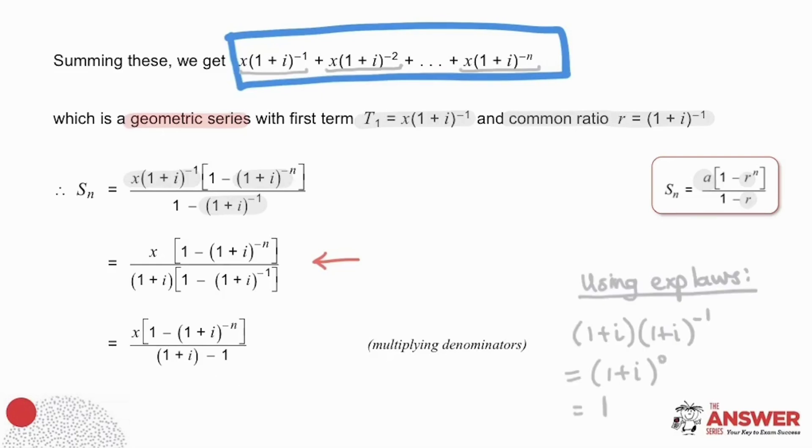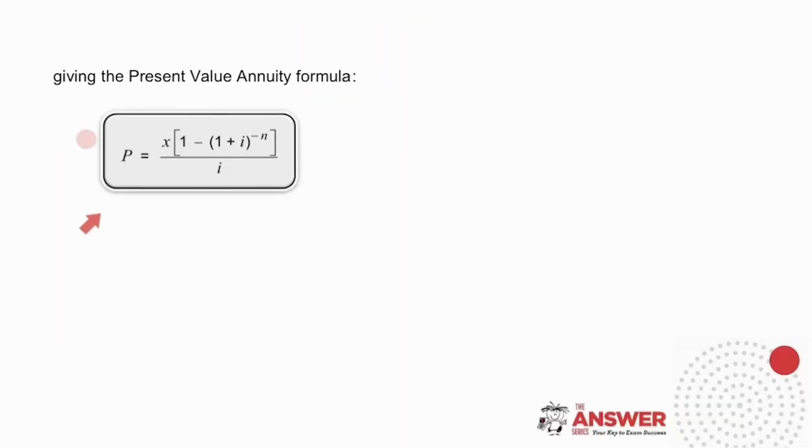This definitely looks a bit simpler now. And one last step, a final simplification of the denominator. The 1s cancel each other out and you're left with i. And here it is, the present value annuity formula. So if we look at what this formula is saying, the present value will be the regular payment, in this case of x rand, multiplied by 1 minus the compounding factor to the minus n, all divided by i.